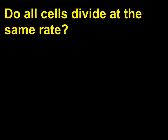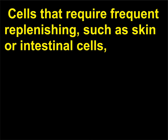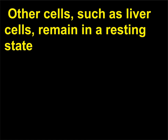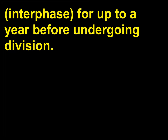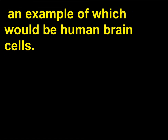Do all cells divide at the same rate? No, all cells do not divide at the same rate. Cells that require frequent replenishing, such as skin or intestinal cells, may only take roughly 12 hours to complete a cell cycle. Other cells, such as liver cells, remain in a resting state (interphase) for up to a year before undergoing division. There are also cells that exist for a lifetime in a non-dividing state, an example of which would be human brain cells.